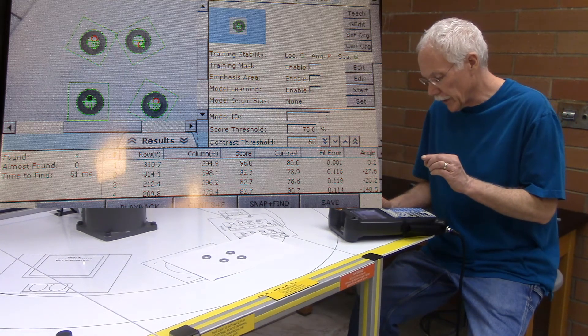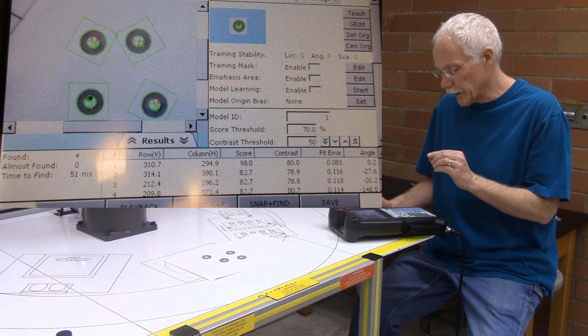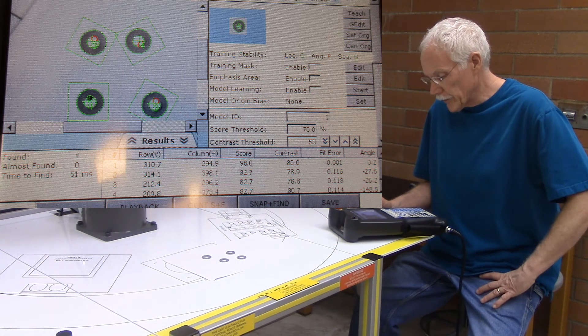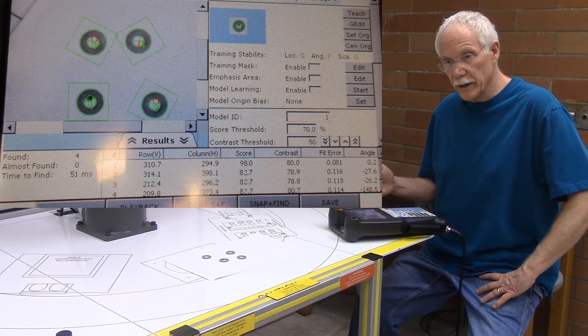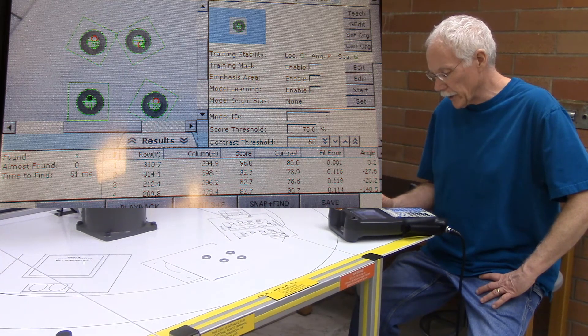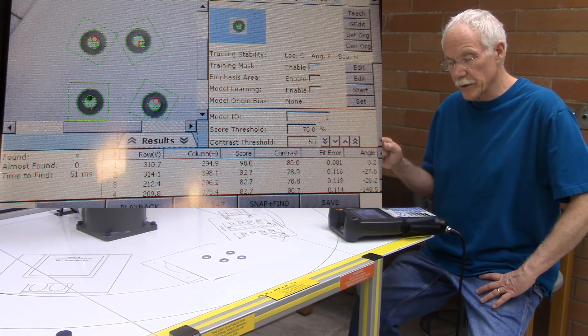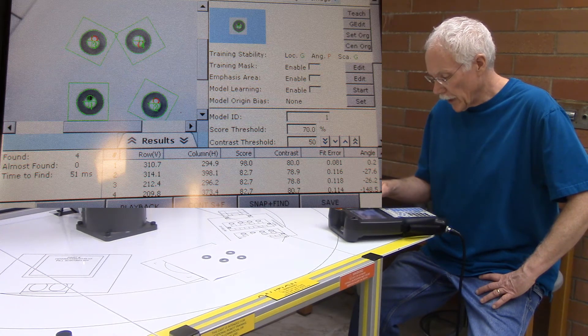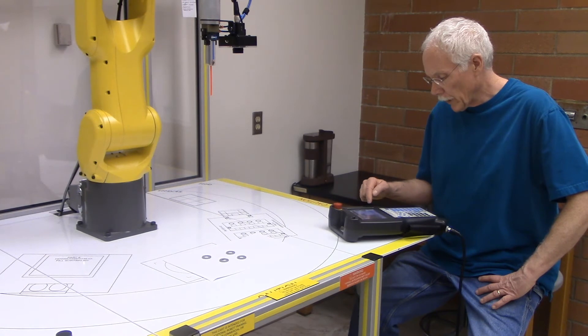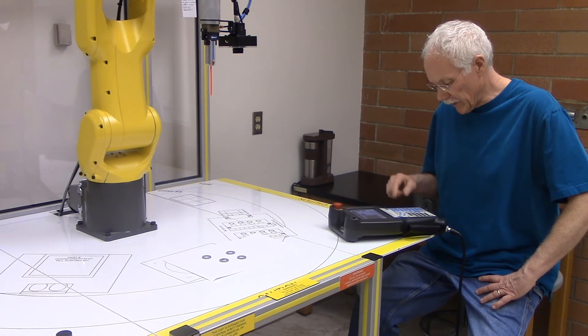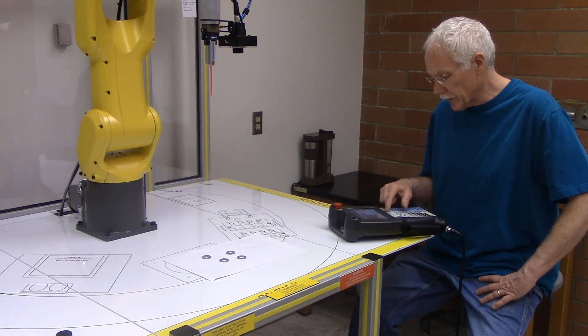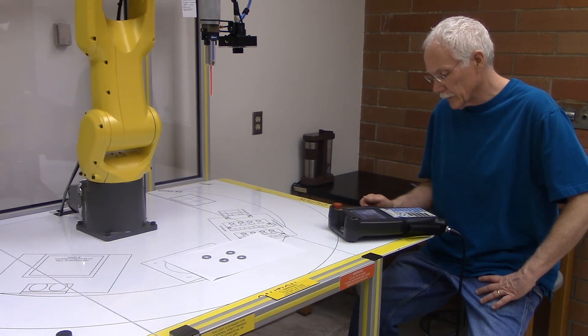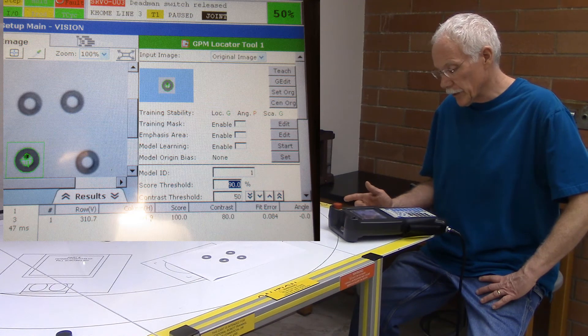But let's say I wanted it to really narrow down its search. One of the things you notice is that the score for the washers without the dots are about 83 and a half percent. If I needed it to look for washers that have those dots, I would go to the score threshold and change that number to say 90%. And then go ahead and do a snap and find. And now it's looking. And it's only found one instance, which is what I would expect.